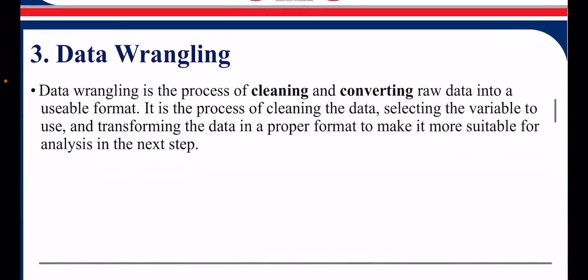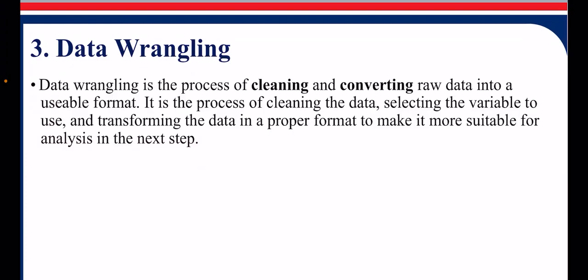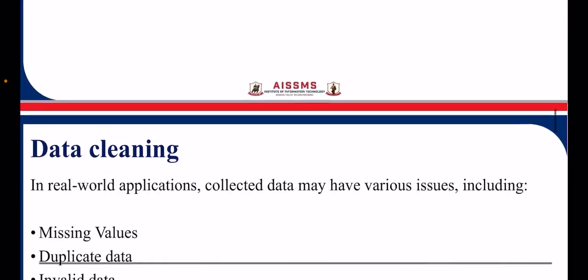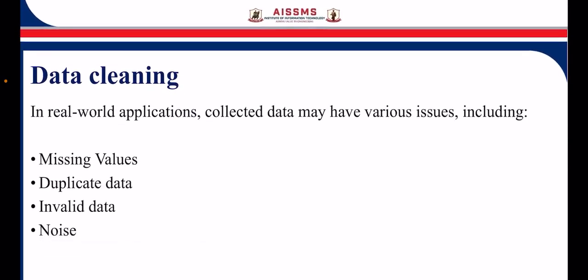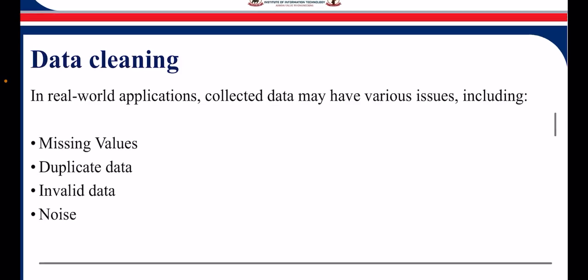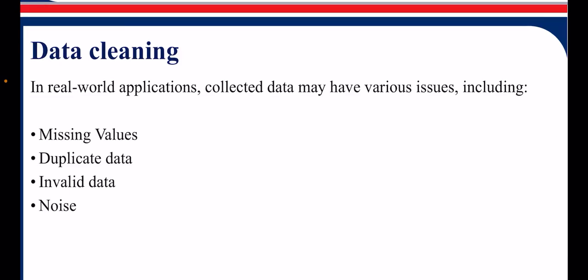Step 4: Data Wrangling. This is a very important phase. Data wrangling is the process of cleaning and converting raw data into a usable format. It involves cleaning data, selecting variables to use, and transforming the data into a proper format to identify missing values, duplicate data, invalid data, and noise in the dataset.